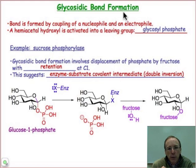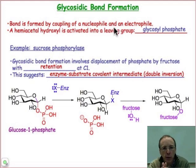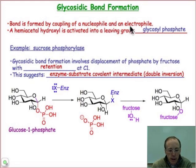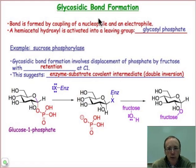Glycosidic bond formation is an enzyme-catalyzed process. It's a coupling reaction that brings together two sugars. Just like every other organic reaction, there's a nucleophile and electrophile involved. In this case, it's two monosaccharides.